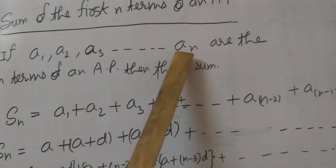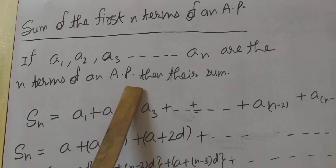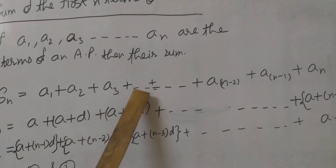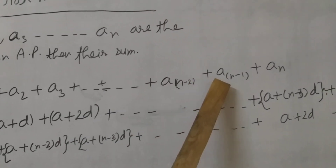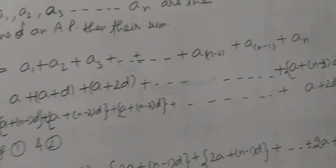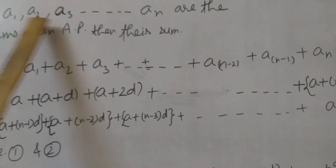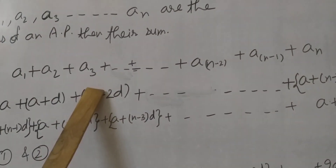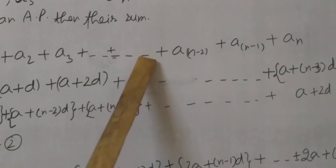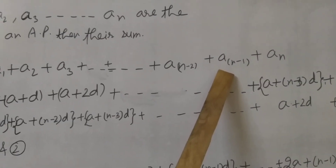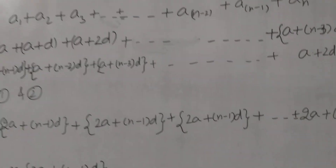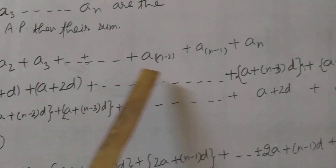If a1, a2, a3, ... an are the N terms of an AP, then their sum Sn equals a1 plus a2 plus a3 plus ... plus an-minus-2, plus an-minus-1, plus an. Students, there are N terms. The first term, second term, third term, and so on up to the Nth term, the N-minus-1th term, and the N-minus-2th term. So we have written some terms — the first three and last three.